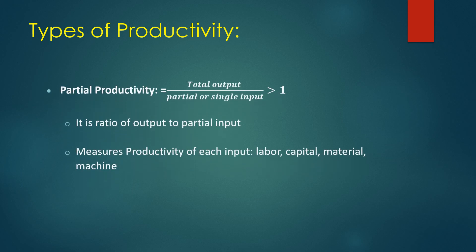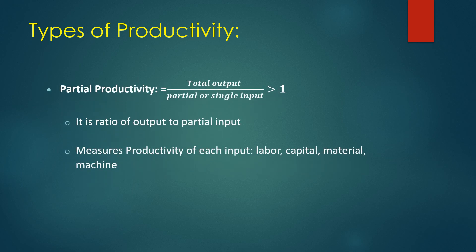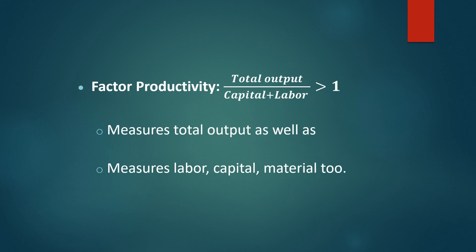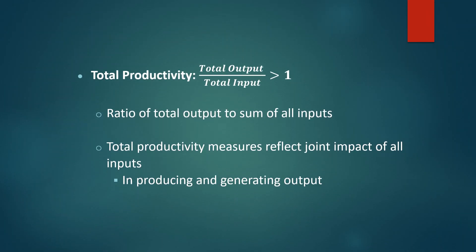Types of productivity include: partial productivity, where total output is divided by a partial or single input and must be greater than one — it measures the productivity of each input such as labor, capital, material, or machine. Factor productivity, where total output is divided by capital plus labor and must be greater than one — it measures total output relative to labor, capital, and material. Total productivity measures the total output to the sum of all inputs, reflecting the joint impact of all inputs in producing output.